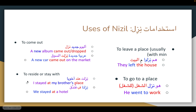Next we have nizl meaning to reside or stay with. For example, anna nzilt a'nda khuya — I stayed at my brother's place. And nizilna fi fundu — we stayed at a hotel. Notice we used two different prepositions with nizl in these examples. Which preposition to use generally follows the different usages, but in some cases it's idiomatic and you have to hear enough examples to guess the right one.